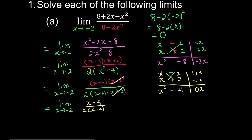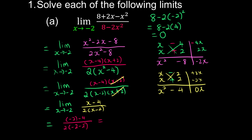After cancellation we're left with x minus 4 over 2(x minus 2). The denominator is no longer 0, so we can now substitute x equals negative 2. That gives negative 2 minus 4 over the denominator. Computing manually: numerator is negative 6, denominator is negative 4. So the final answer is 3 over 4.